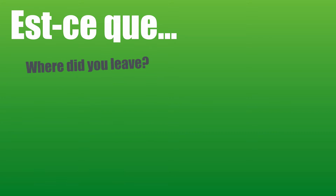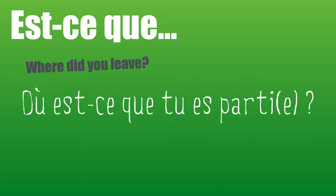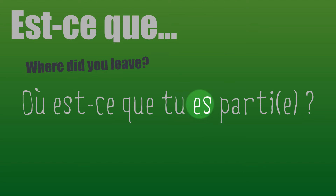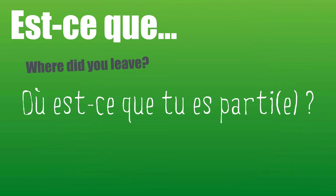If you want now a past example: where did you live? In French, it will be: où est-ce que tu es parti? When we speak, as you can hear, there are some contractions. Où est-ce que t'es parti? — tu es becomes t'es when you speak normally. T'es parti. Où est-ce que t'es parti?